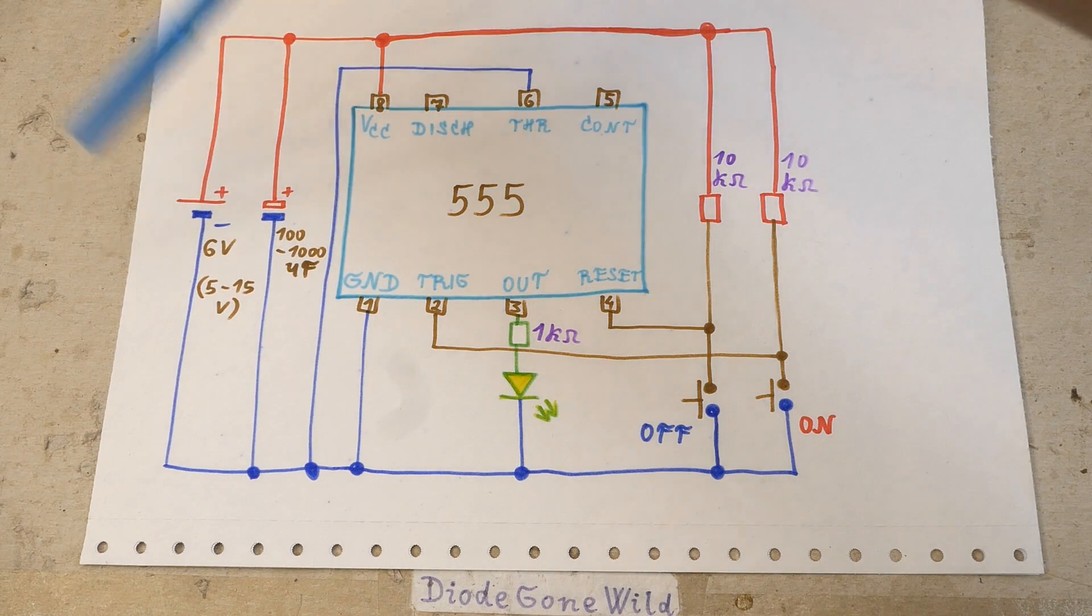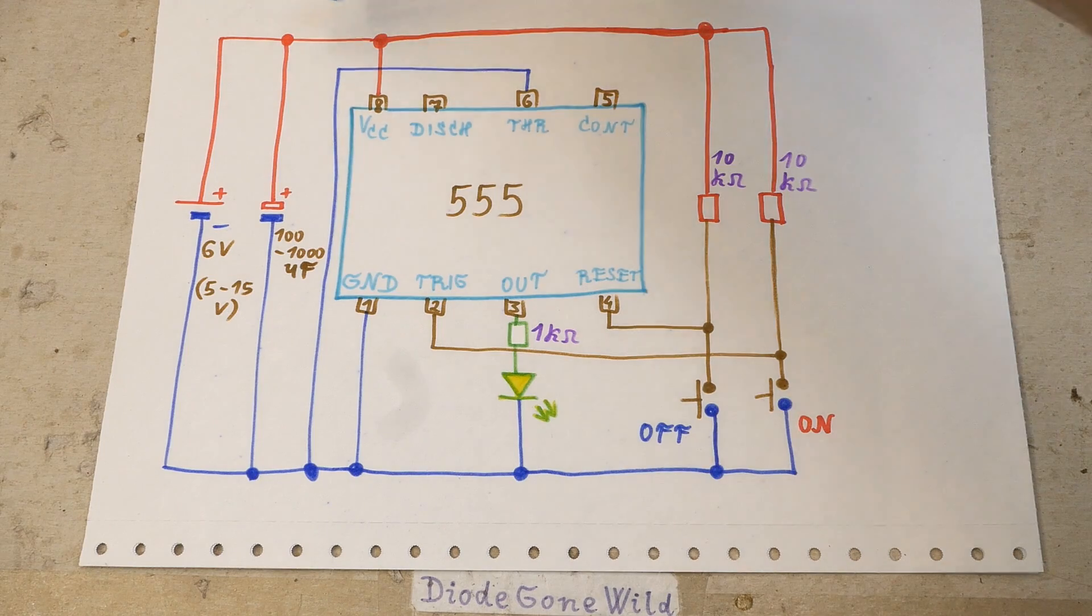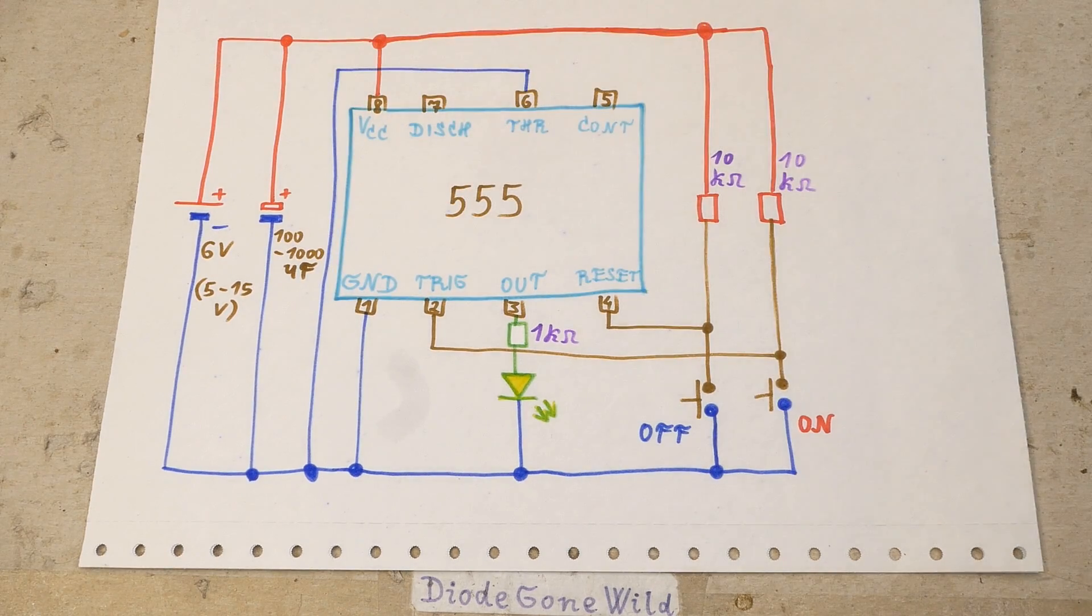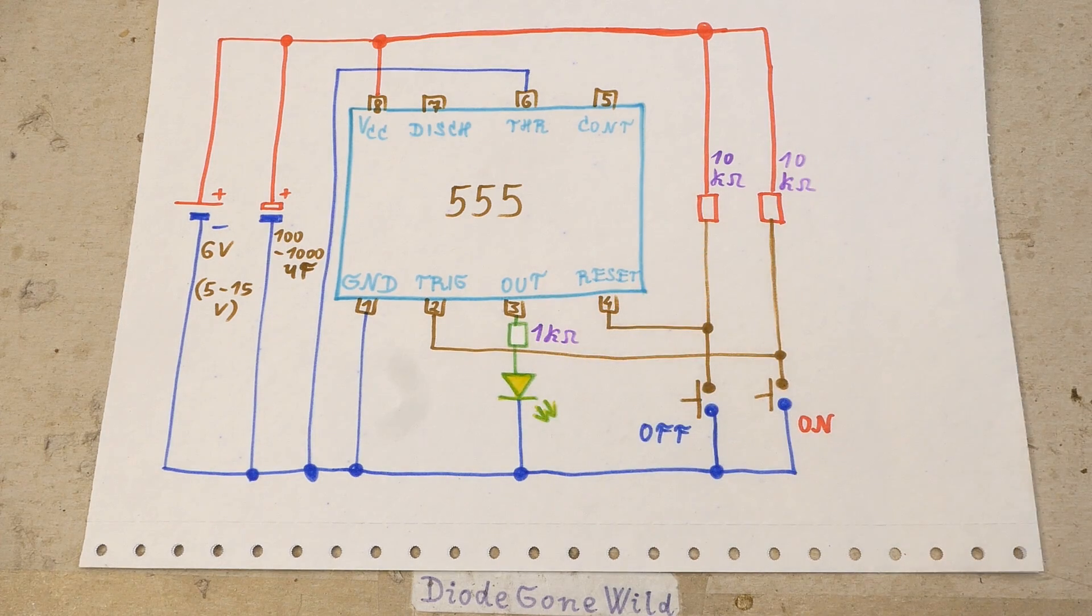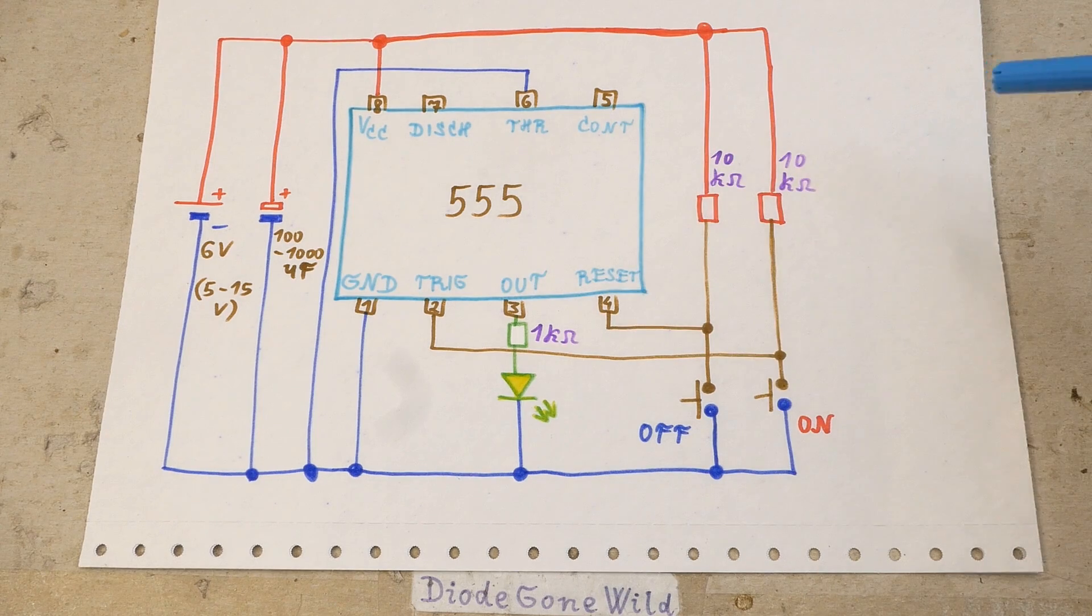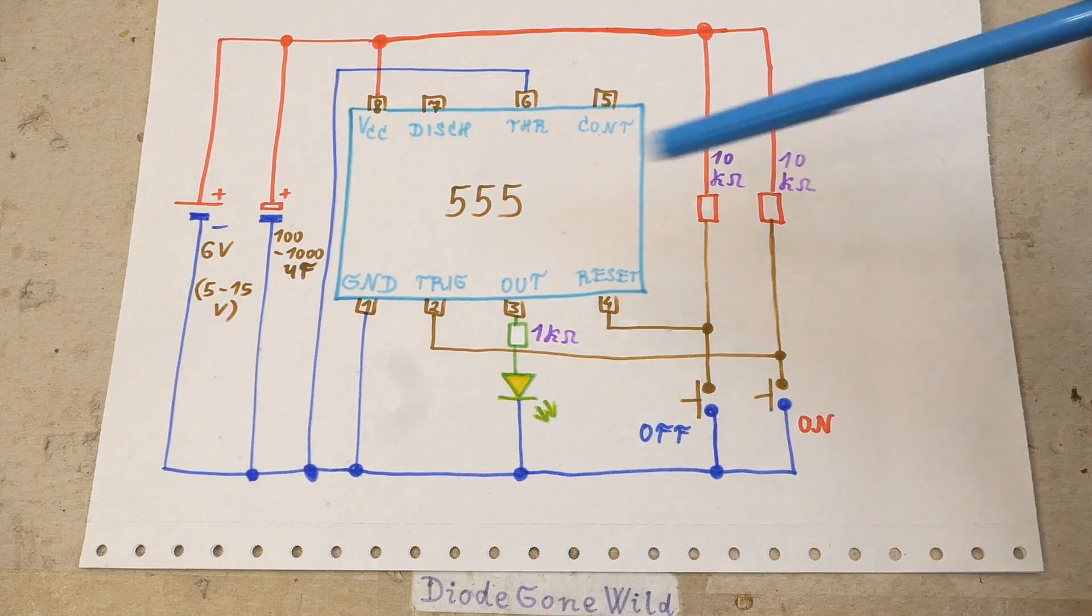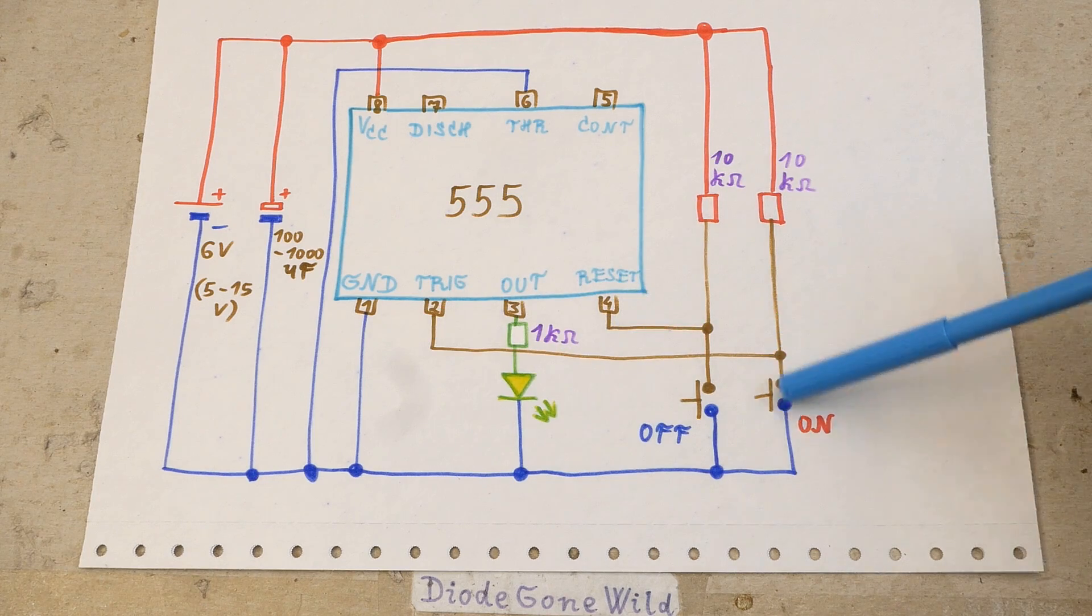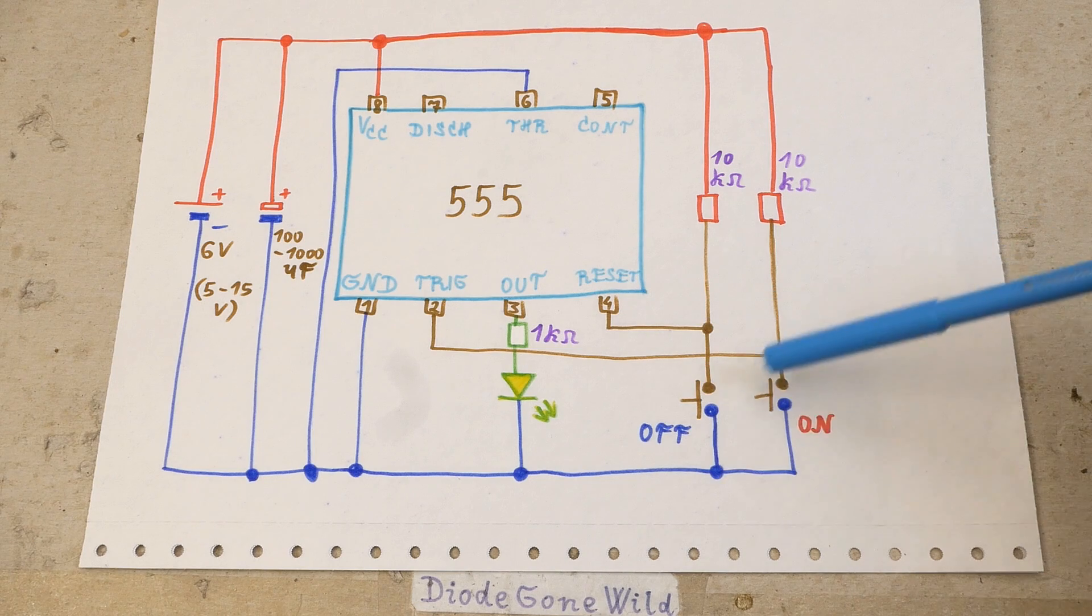It has a battery or power supply here, a capacitor on the supply rail for stability. The power supply goes into the supply pins of the chip. The output goes into an LED via a resistor in series. And to flip it on and off it's using two inputs of the chip. The pin 4 reset to turn it off using this button, and the pin 2 trigger to turn it on using this button.